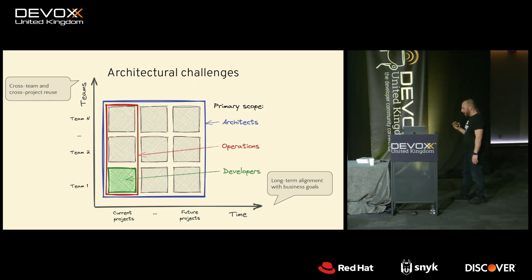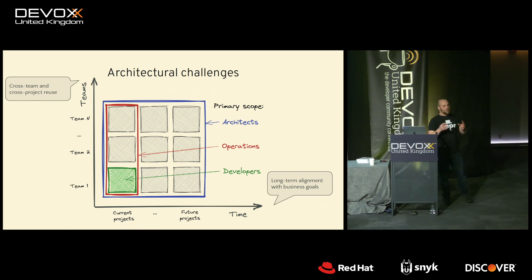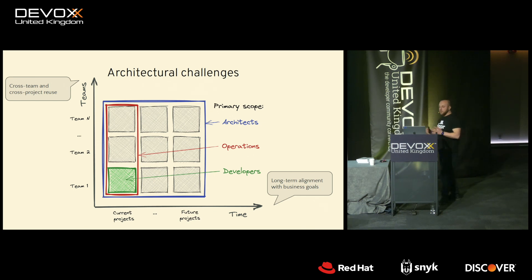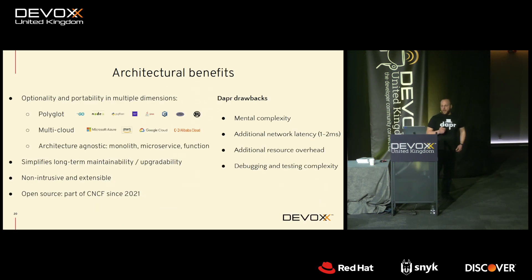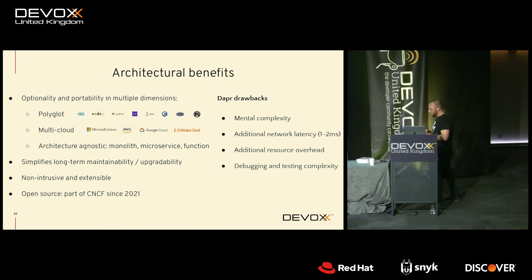Moving on to architects. As a developer you're typically focused on one project at a time delivering functionality quickly. Ops teams work across multiple teams and projects, automating at scale. As an architect, you have one more dimension — a longer-term vision aligned with your company strategy, looking after multiple teams over a longer time frame. DAPR provides many benefits to an architect. First, it gives you optionality and portability. When designing a solution using DAPR and working with multiple teams, you can use specific patterns and capabilities from DAPR regardless of the language and runtime used by different teams.